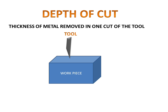And what is depth of cut? Depth of cut is the thickness of metal removed in one cut of the tool — how much metal is removed on the work piece by the cutting tool in one cut. This could be 1mm, 2mm, 3mm — how much metal is removed in one cut.